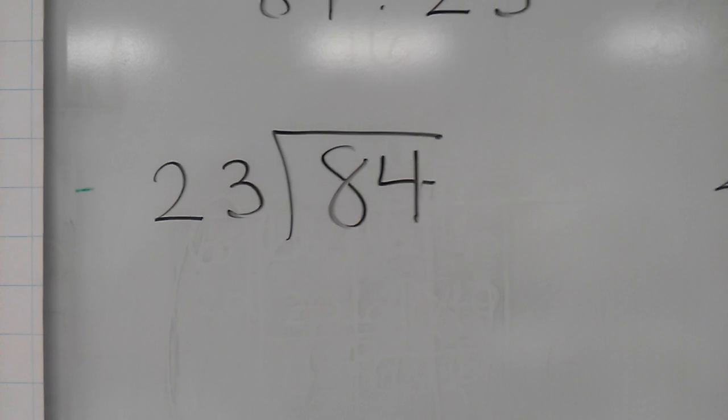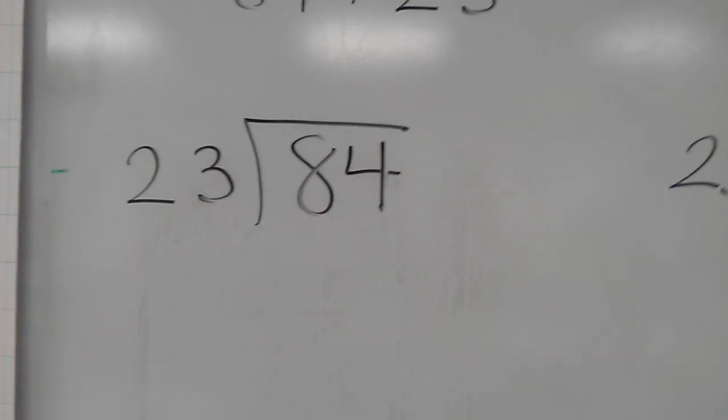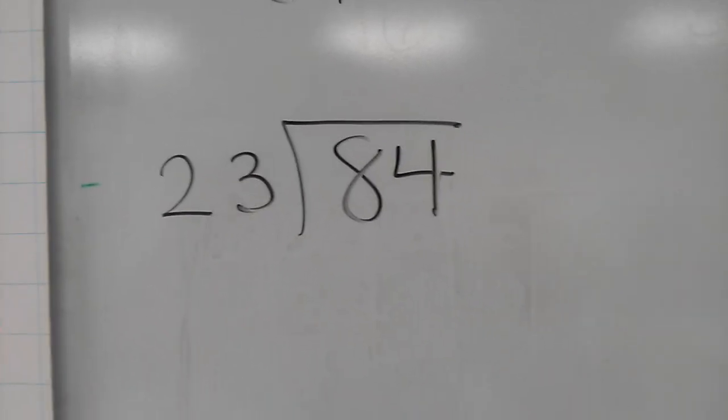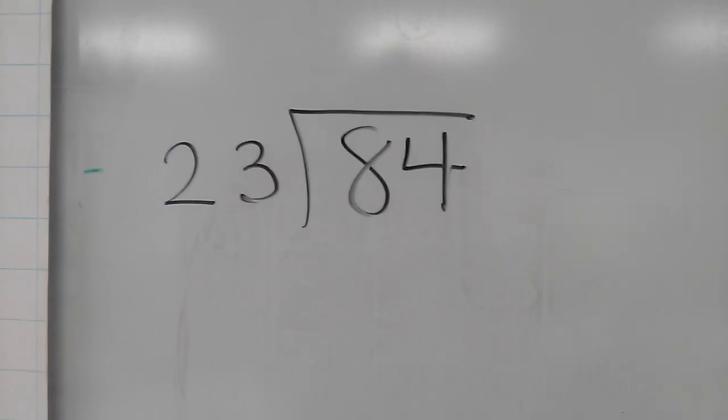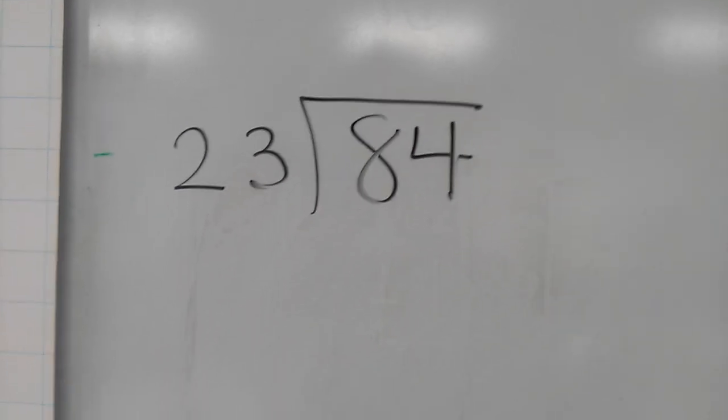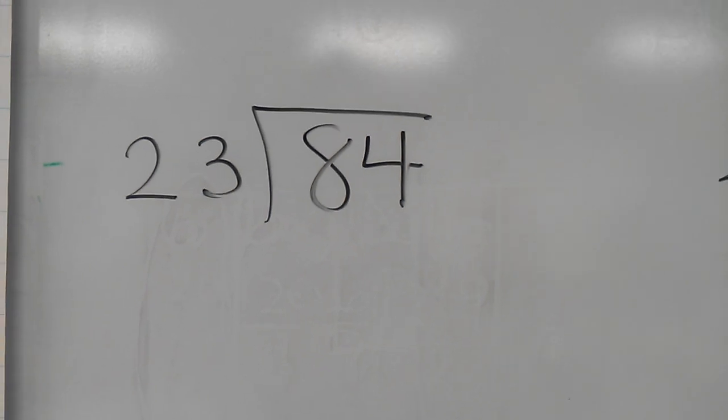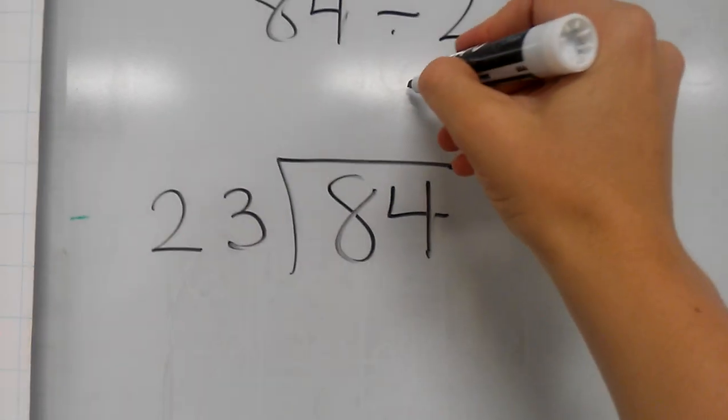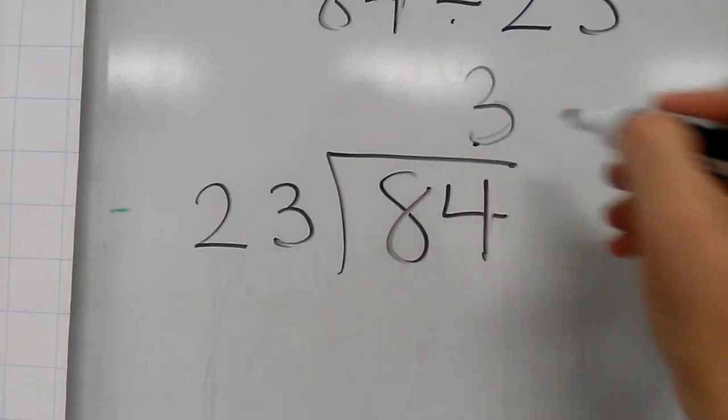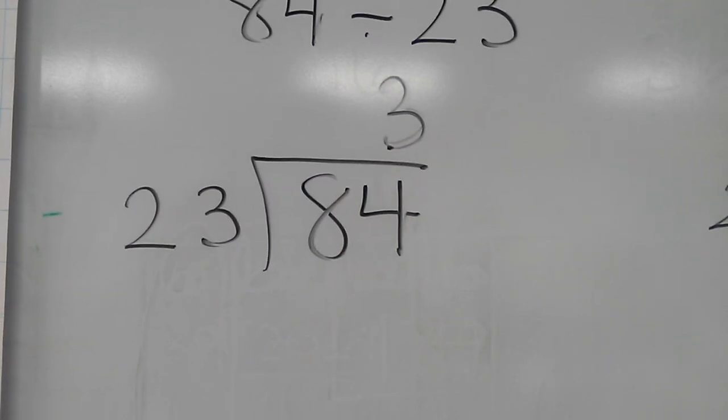So at this point, most kids, unless they have strong number sense, would go off to the side and do a lot of side work. 23 times 2 and they would get an answer. 23 times 3, get an answer until they find the perfect number of how many times it goes in. This particular number goes in three times. Most kids would need to do side work to figure that out.